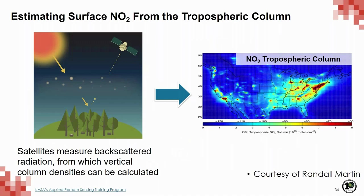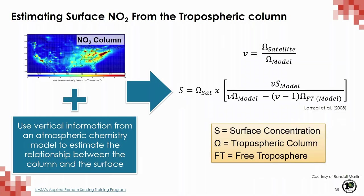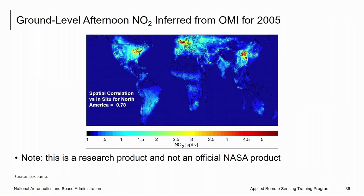Some researchers have used tropospheric column NO2 to estimate surface-level NO2. Their approach starts with retrievals of the NO2 tropospheric column — here on the left, we see a graphic of a satellite measuring the backscattered radiation from which the column can be calculated. Using the retrieved columns along with information about the vertical distribution from an atmospheric chemistry model, they estimate the relationship between the column and the surface. Here, V is the satellite-to-model column ratio, and the lower equation uses this relationship to relate model surface concentrations to the model boundary layer. This plot shows an example of annual mean surface NO2 for 2005 — the spatial correlation versus in situ measurements over North America is 0.78. This is a research product and not an official NASA product.